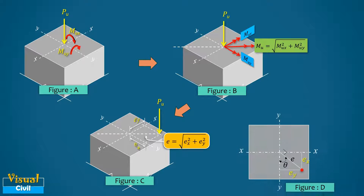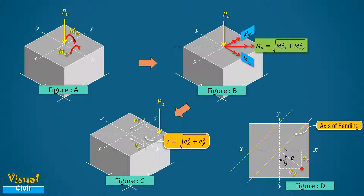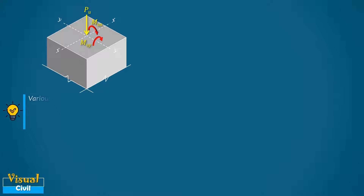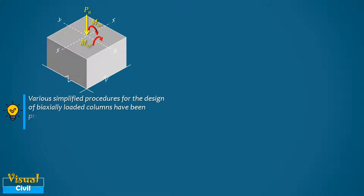When the column section including the reinforcement is axis-symmetric with reference to the longitudinal axis, the resultant axis of bending is also a principal axis, as shown in figure (d). In such a situation, the case of biaxial bending simplifies into a case of uniaxial bending. Various simplified procedures for the design of biaxially loaded columns have been proposed by researchers and adopted by different design codes.